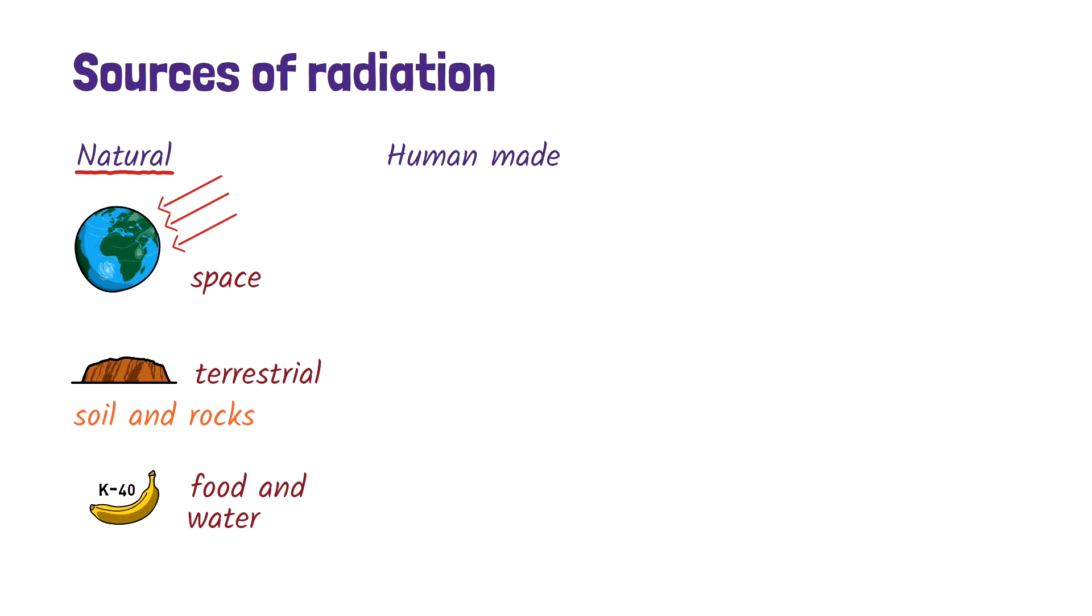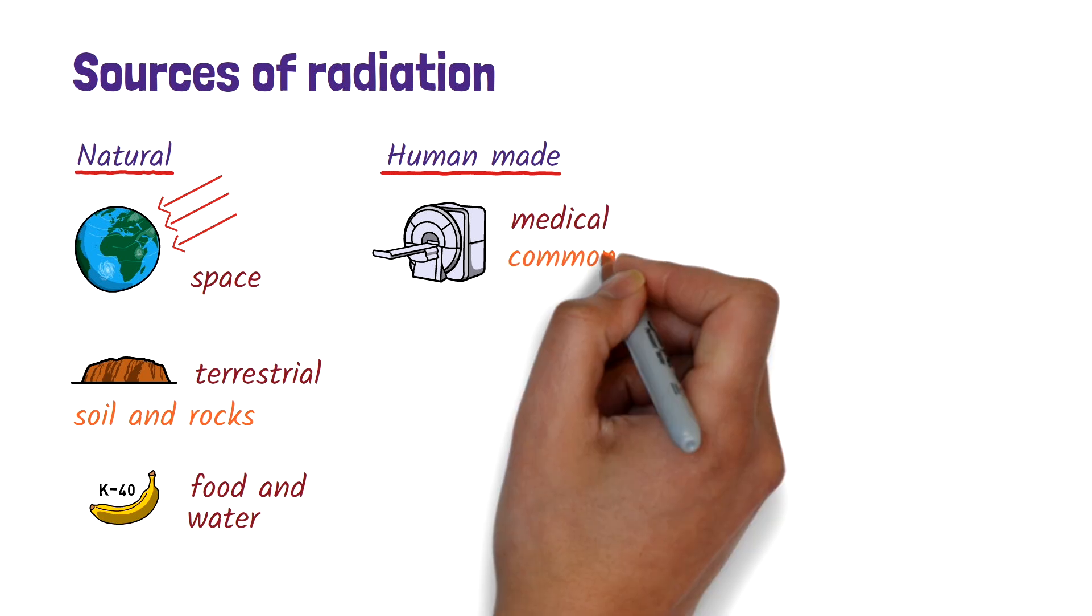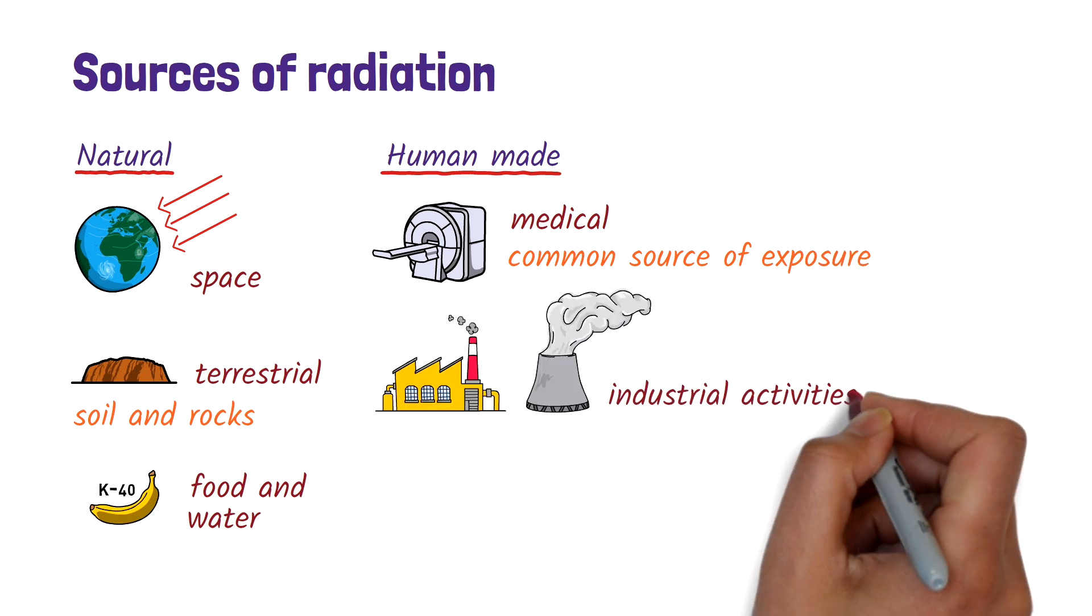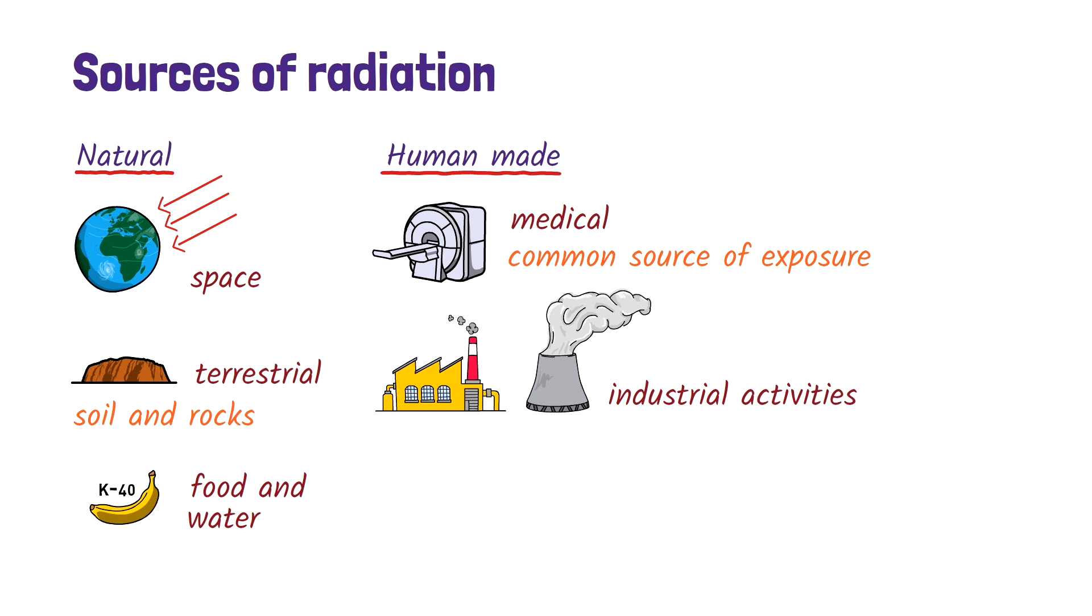Then, there are human-made sources. These include medical procedures like X-rays, CT scans, and radiation therapy, which are some of the most common sources of exposure today. There's also radiation from industrial activities like mining or nuclear energy. Some consumer items, like smoke detectors, may contain small amounts of radioactive material. Even tobacco products and certain older products, like glow-in-the-dark radium watch dials, can be sources of radiation.